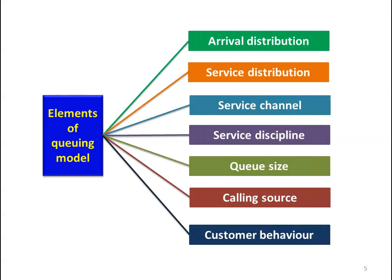What are the elements of the queuing model? The various parameters are: arrival distribution, service distribution, service channel, service discipline, queue size, calling source, and customer behaviour. These are the characteristics or elements of the queuing model, and we will see them one by one.